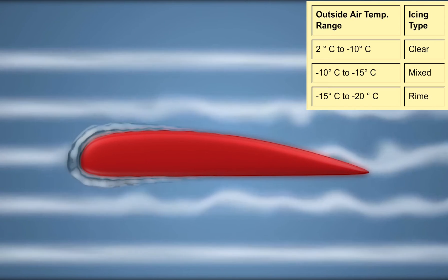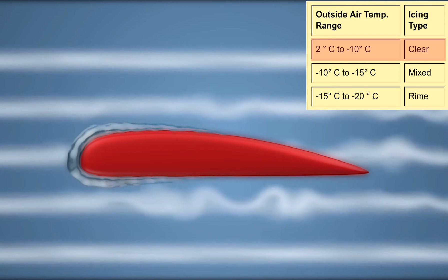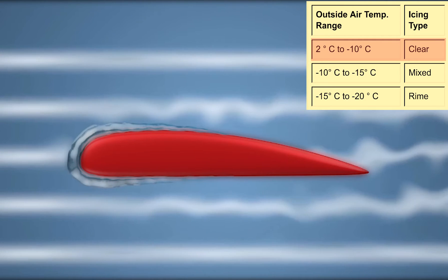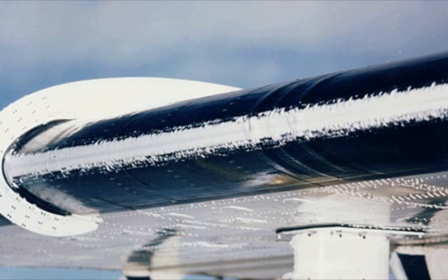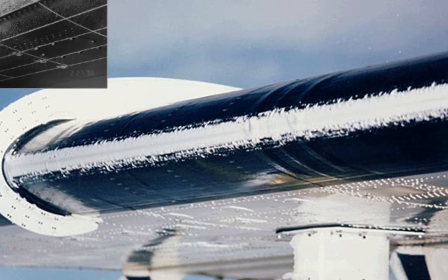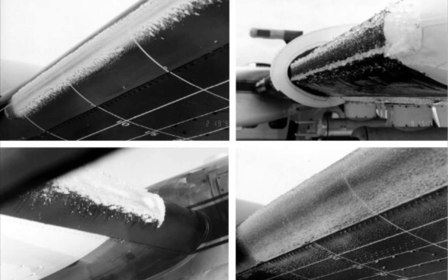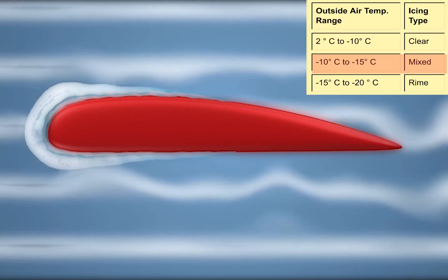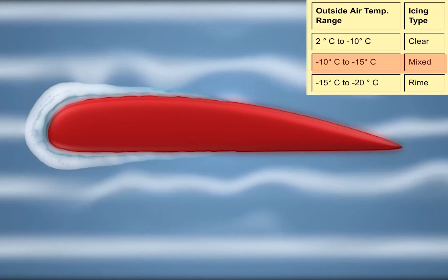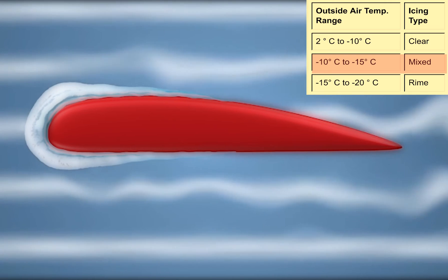Clear ice generally forms in temperatures ranging between 0 degrees Celsius to minus 10 degrees Celsius. Mixed ice forms whenever you encounter some large supercooled water droplets and some finer smaller droplets, or even worse, freezing rain. It forms in temperatures ranging between minus 10 degrees Celsius and minus 15 degrees Celsius.